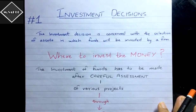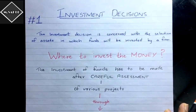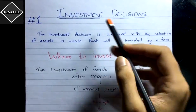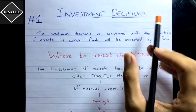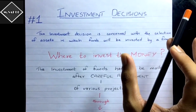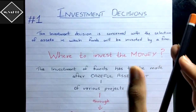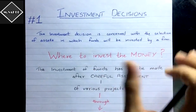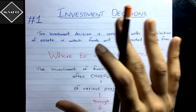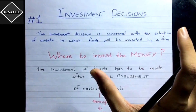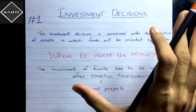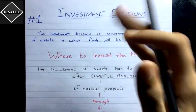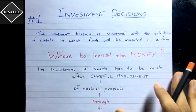Hi everyone. In this video we're going to start this new chapter of financial management — investment decisions. In this video we are just going to see the basic idea of this chapter. We are not going to solve any problems; we are just going to have a brief little idea about this chapter, and in the coming videos we are going to see the problems.